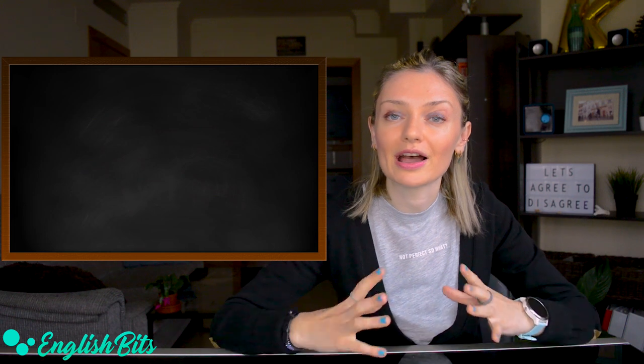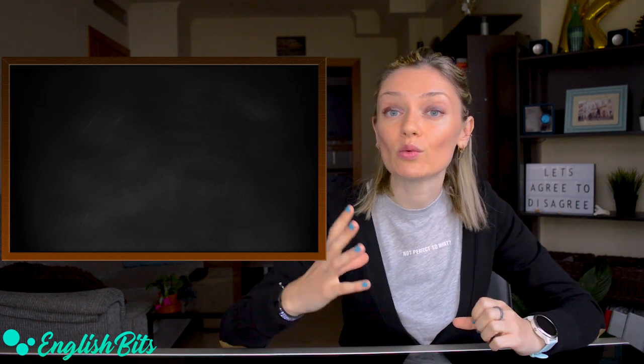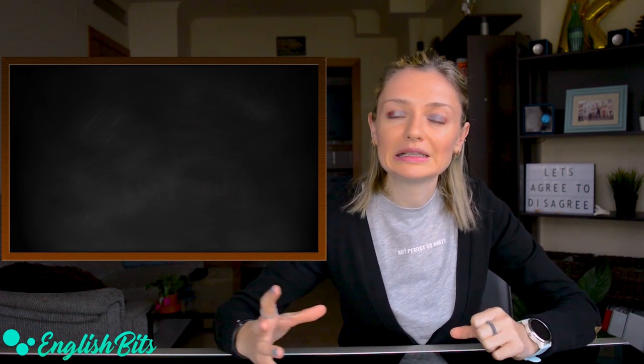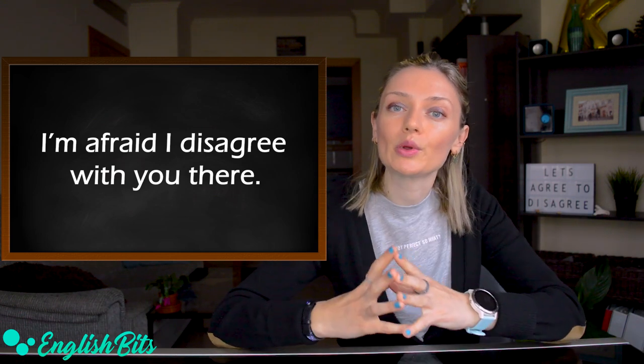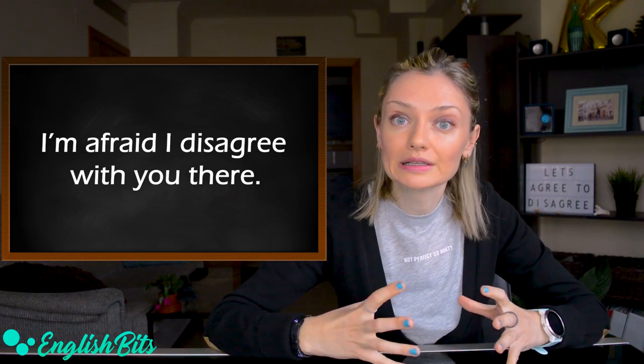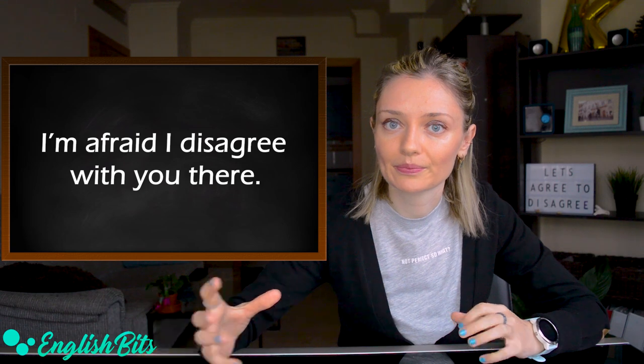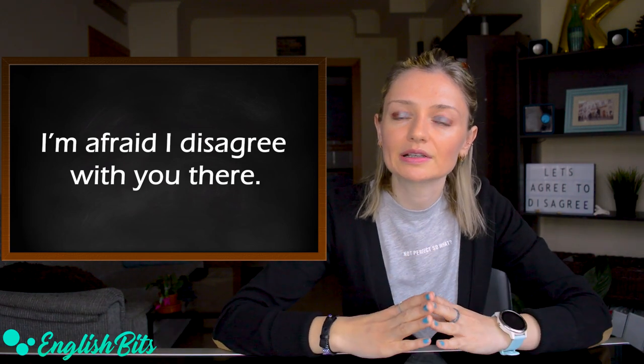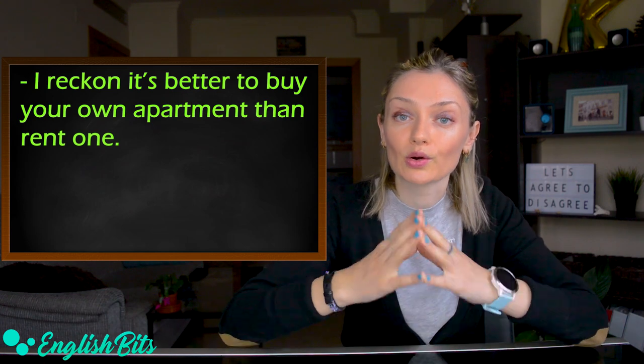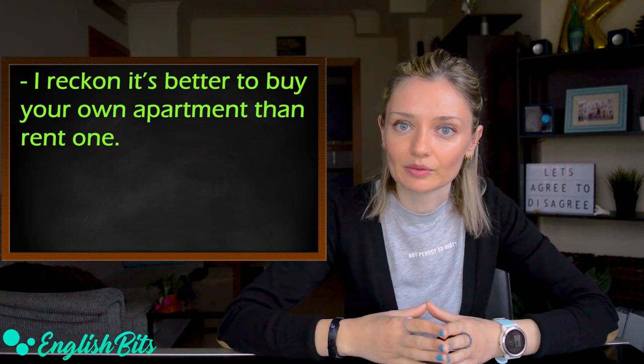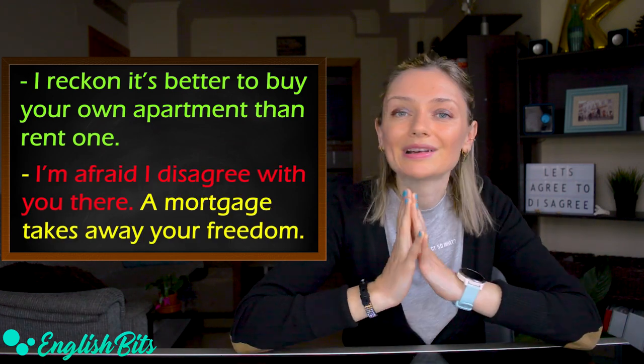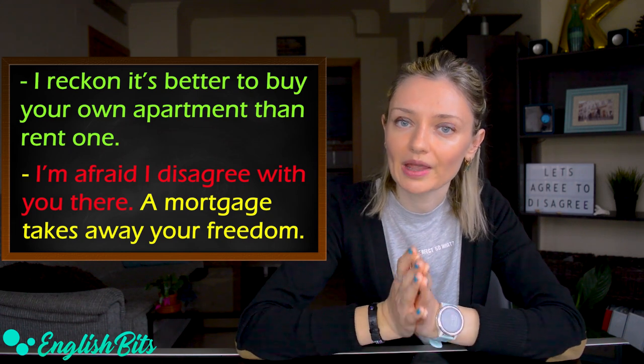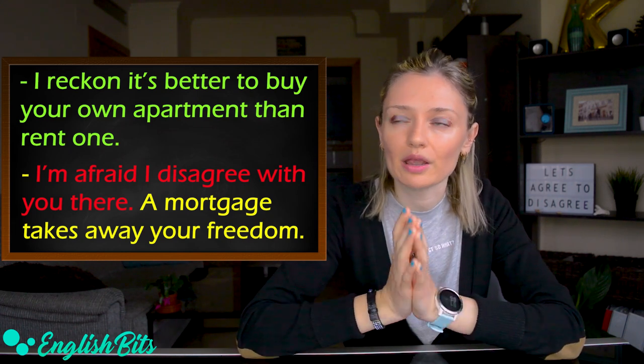And now let's get started. The first expression that you can use to disagree with someone politely is 'I'm afraid I disagree with you there'. Let's put it into an example sentence. I reckon it's better to buy your own apartment than rent one. I'm afraid I disagree with you there. A mortgage takes away your freedom.